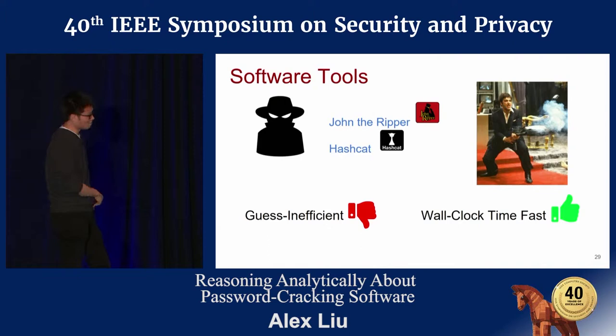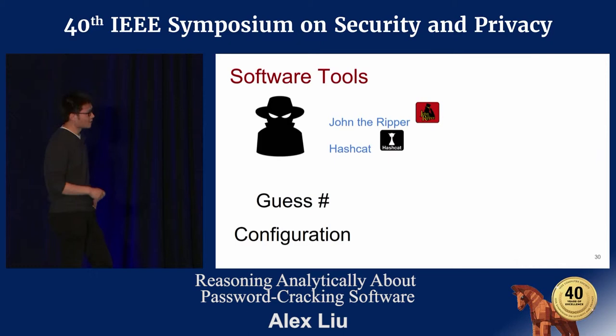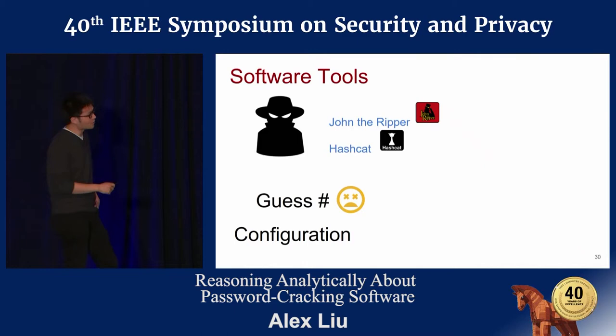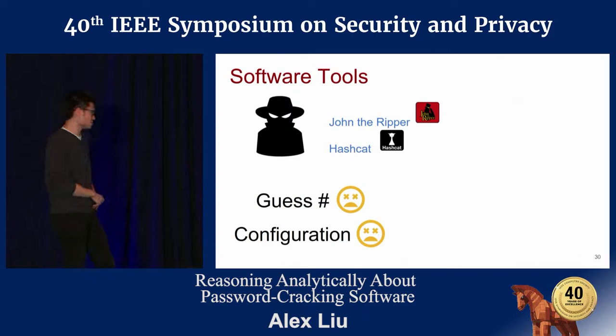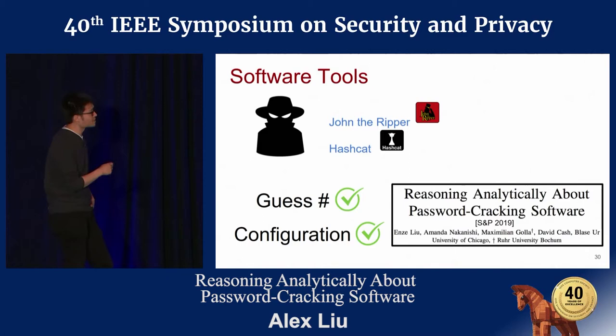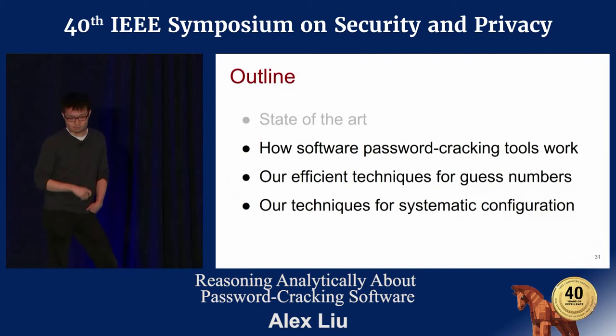Here's my password — tell me the guess number. Prior to our work, you had to do this the naive way: enumeration. But this doesn't work because usually when you're typing a password, you want to know the guess number immediately. With enumeration, at best you say 'come back tomorrow.' And this expensive enumeration also makes configuration hard, because every time you try a new configuration you have to wait hours. This leads to our work: we introduce new tools to reason scientifically about real-world password-cracking software to address these two issues.